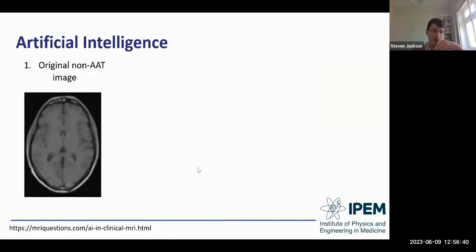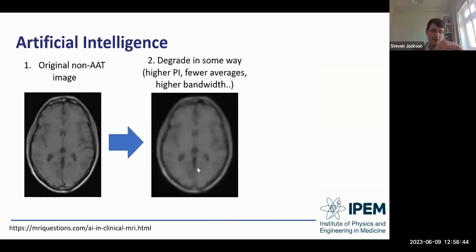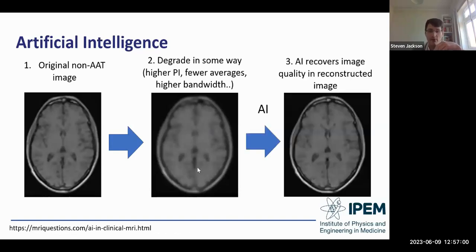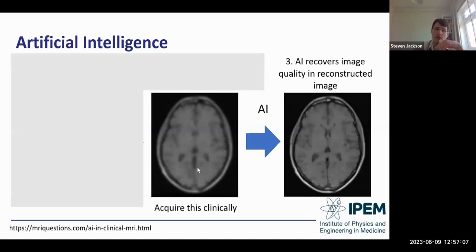In clinical practice: if we start with an original non-AAT image, we can degrade it — by employing a higher parallel imaging factor, reducing the number of averages, employing a higher bandwidth, or decreasing matrix size — and in theory use AI to recover all the image quality lost in degrading it. The clinical deployment is to acquire a degraded image quickly and use the AI to reconstruct the full-resolution, higher SNR image. The middle degraded image in this demonstration is an exaggeration of the process, but that is essentially how these algorithms reduce time while maintaining or improving image quality.